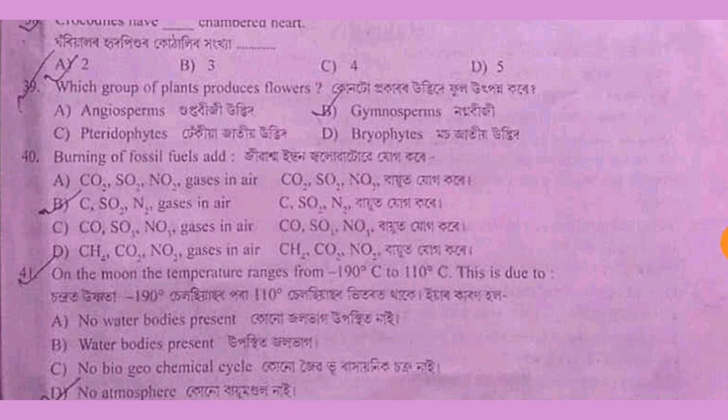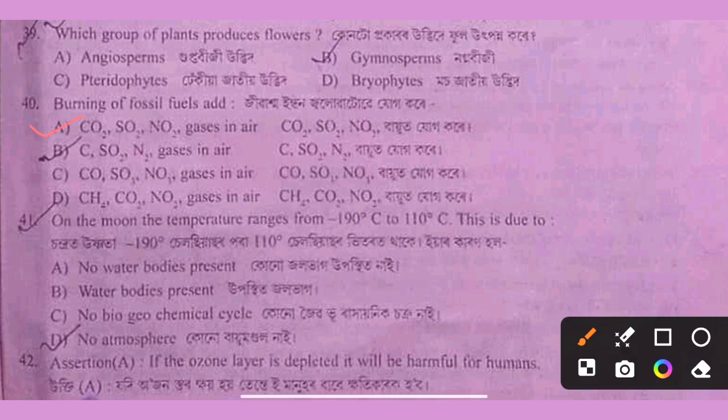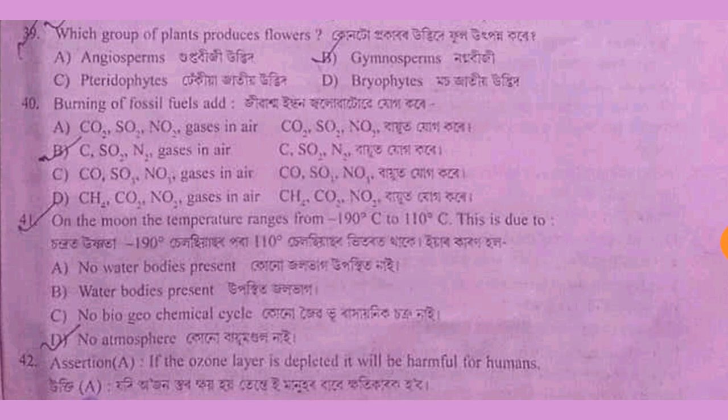Next question: the burning of fossil fuels produces carbon dioxide, sulfur dioxide, and nitrogen dioxide. These gases cause acid rain. Option A.